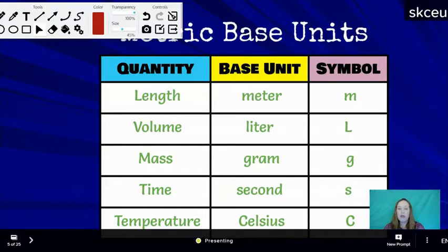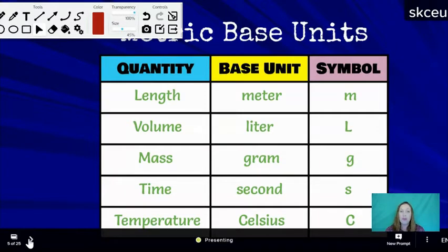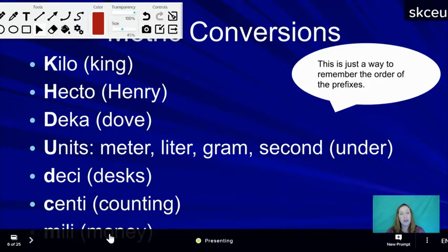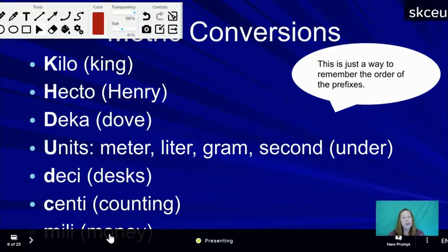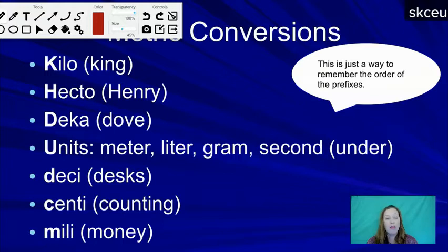The units we use: for length we use meters, for volume we use liters, for mass we use grams, for time we use seconds, and for temperature we use Celsius. If you travel outside the country, people will give temperatures in Celsius and speeds in kilometers per hour. The metric base prefixes are: kilo, hecto, deca, the base unit, deci, centi, and milli — and as you go from one to the next you're adding a factor of 10.